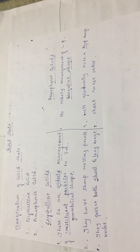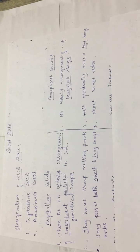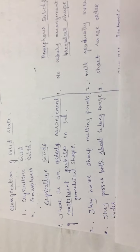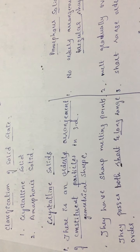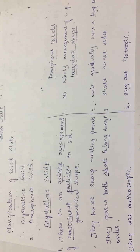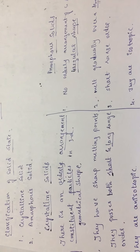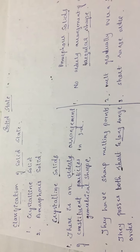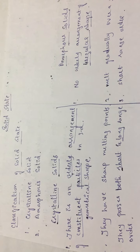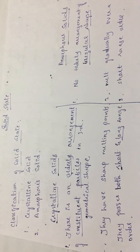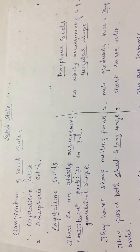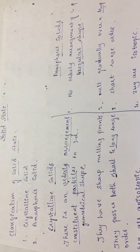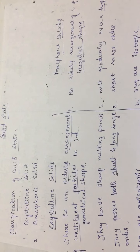Crystalline solids possess both short range order and long range order, but amorphous solids have only short range order. Short and long range order means the regular and periodic repetition of constituent particles throughout the entire crystal. In amorphous solids, that regular and periodic repetition of constituent particles is observed only over short distances, so they possess only short range order.